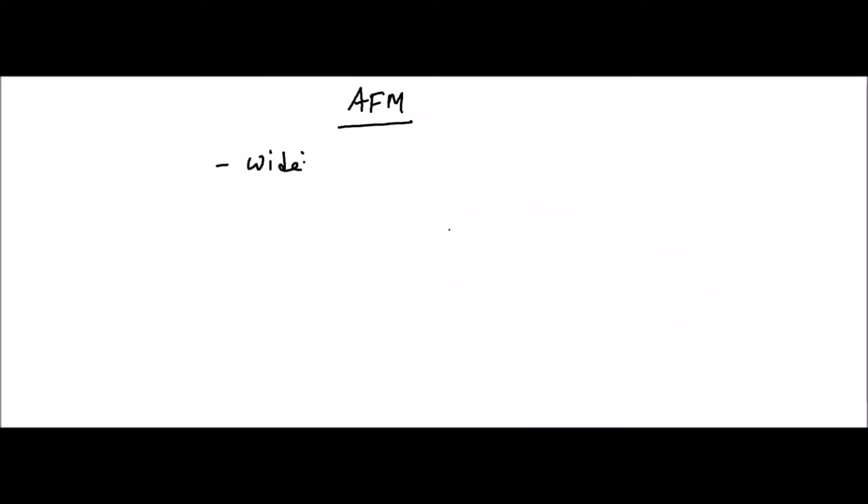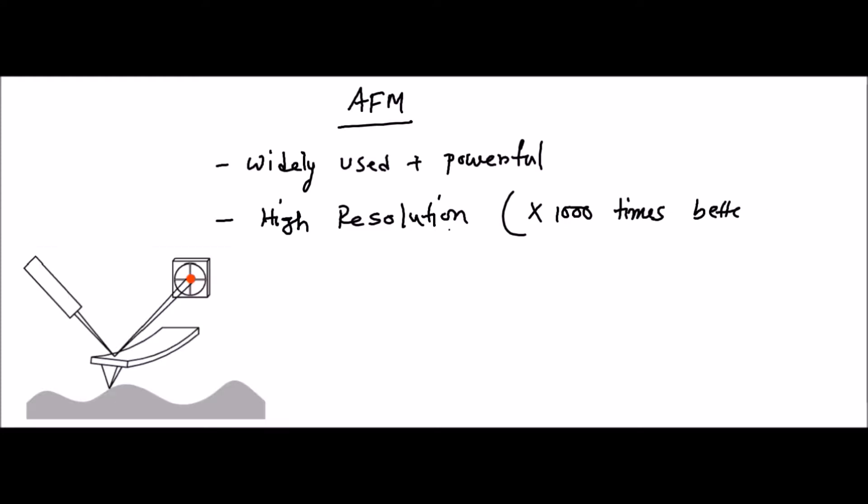Atomic force microscope is a widely used powerful technique to study the surface of material or samples. It has very high resolution, even more than 1000 times better than optical diffraction imaging. The sharp tip of AFM is attached to the free end of a cantilever which gathers the surface image by touching or tapping the surface. A laser beam and detector is used to record the cantilever response.